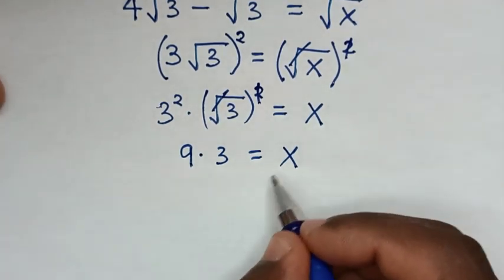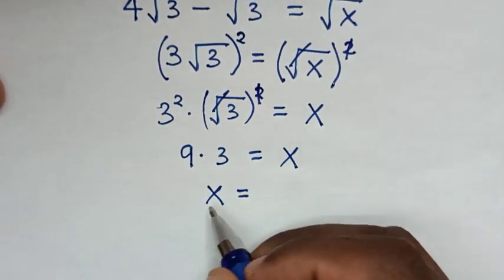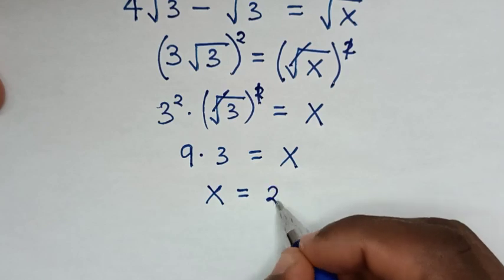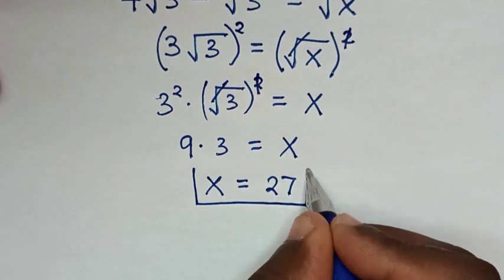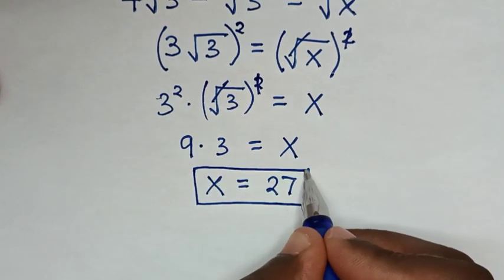Then x equals 9 times 3, which is 27. Therefore, this is the final answer for the value of x in this problem.